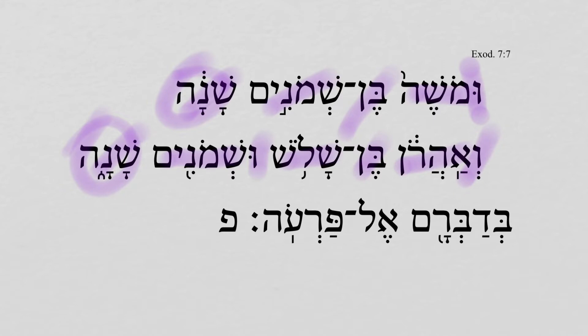This is pretty normal in Hebrew. So Moses is 80, Aaron is 83, when the speaking of them — that is, when they spoke to Pharaoh.